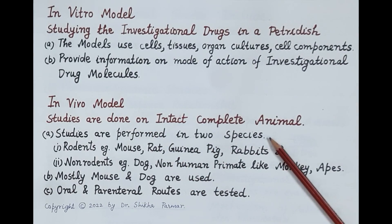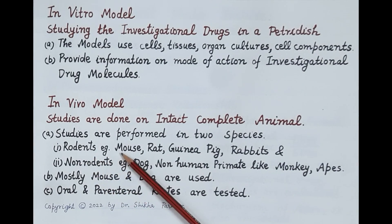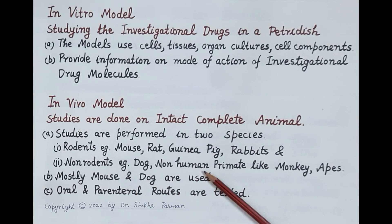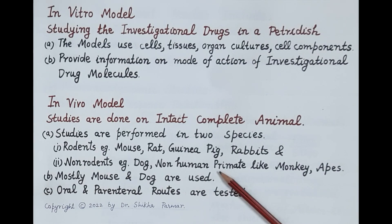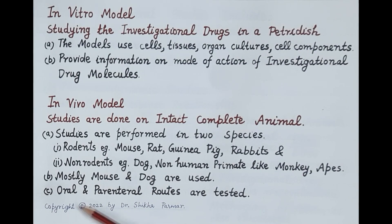Studies are performed in two species: rodents and non-rodents. Rodents include mouse, rat, and guinea pig; non-rodents include dog and non-human primates like monkeys and apes. Mostly mouse and dog are used as experimental models. Studies on monkeys and apes are performed occasionally, only in the case of large molecules. Optimized drug candidates are tested by both oral as well as parenteral routes.